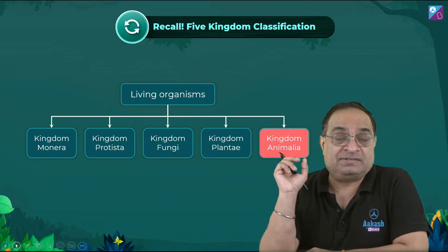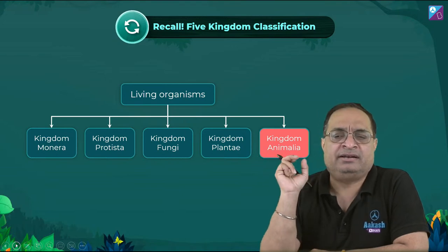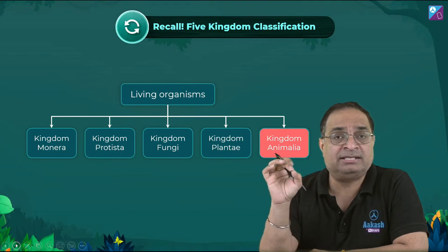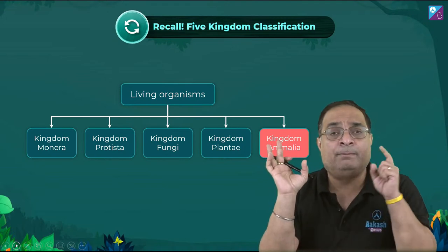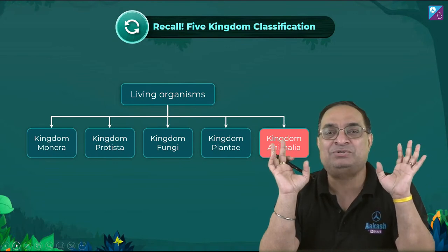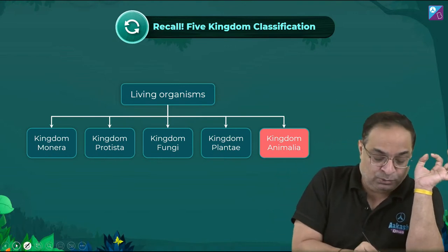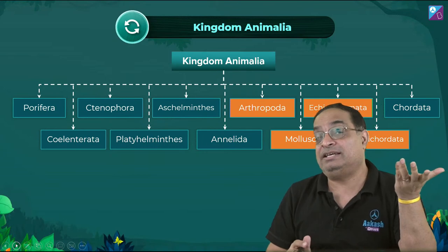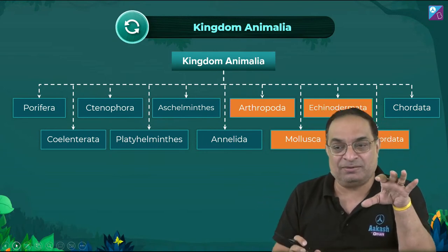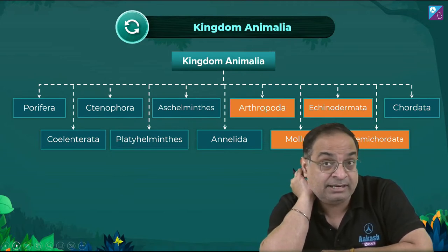Whittaker's Five Kingdom Classification has 5 kingdoms: Kingdom Monera, Kingdom Protista, Kingdom Fungi, Kingdom Plantae, and Kingdom Animalia. We are currently doing Kingdom Animalia — animals have no cell wall and are multicellular. Today's session will focus on Phylum Arthropoda, Mollusca, Echinodermata, and Hemichordata.